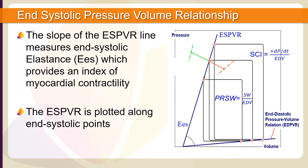The slope of the End-Systolic Pressure Volume Relationship, ESPVR, provides insight into the ventricle's end-systolic elastance, which provides an index of ventricular myocardial contractility. The ESPVR line is generated by plotting a line through the end-systolic points of the PV loop. The slope of the ESPVR line gives us a measure of contractility. A steeper or greater slope would indicate higher ventricular contractility.